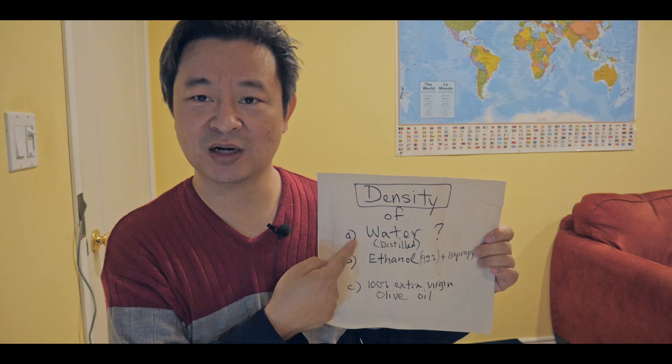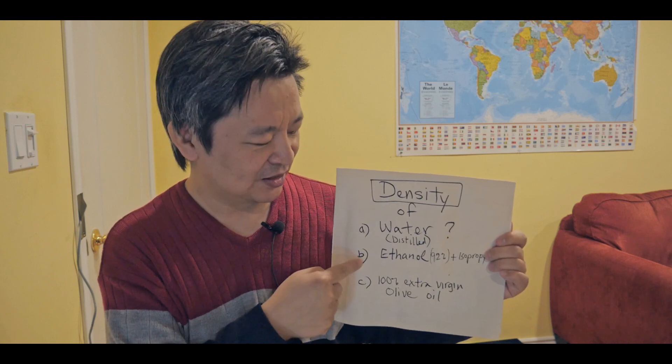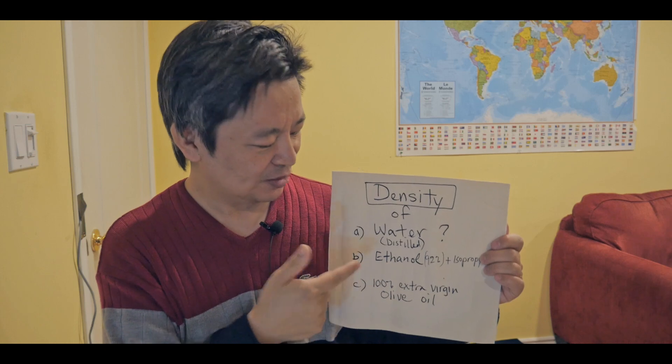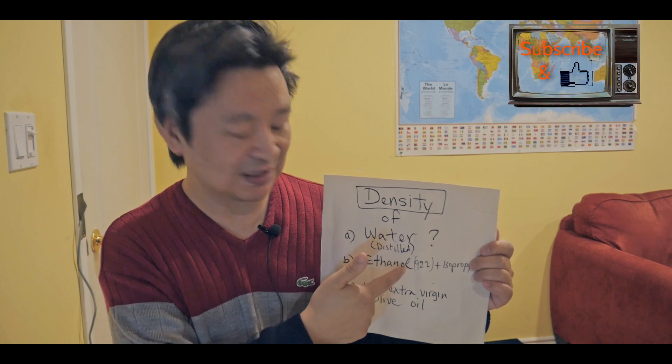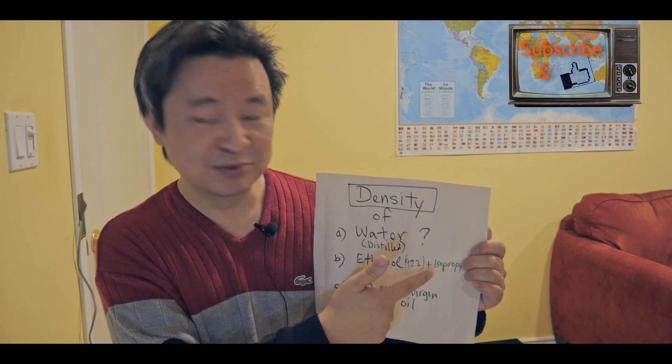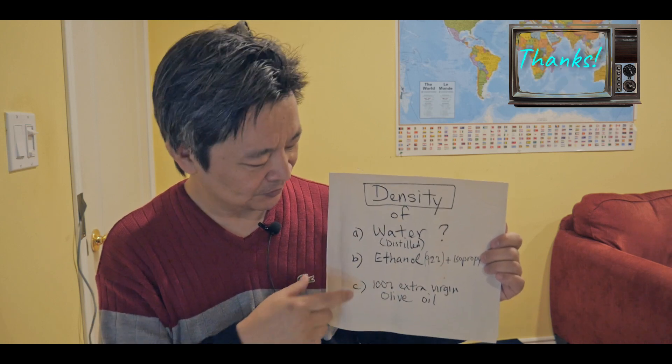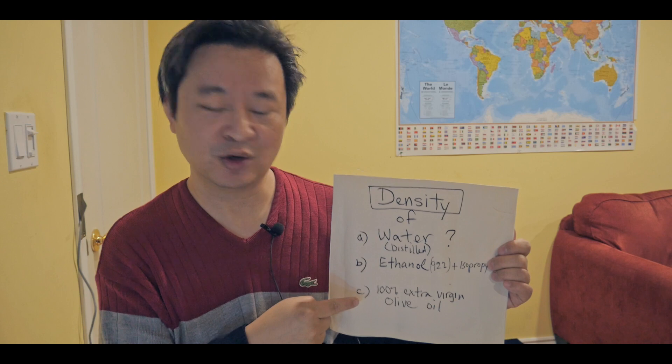Again, we're going to be measuring distilled water, the ethanol and isopropyl alcohol biofuel that consists of 92% ethanol and 8% isopropyl alcohol. We'll see how that density turned out to be. And then of course, the olive oil, the 100% extra virgin oil. Now, before we do that, you have to have the following instruments.